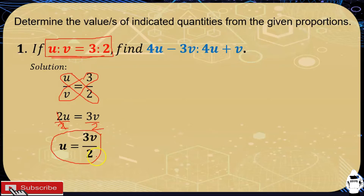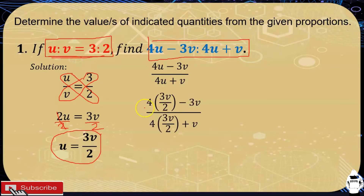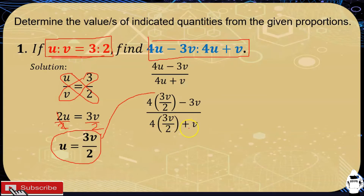Since we now have the value of u, we substitute it into 4u minus 3v is to 4u plus v. This can be written in fraction form as 4u minus 3v all over 4u plus v. We substitute the value of u, which is 3v over 2, giving us 4 times the quantity 3v over 2 minus 3v, all over 4 times the quantity 3v over 2 plus v.